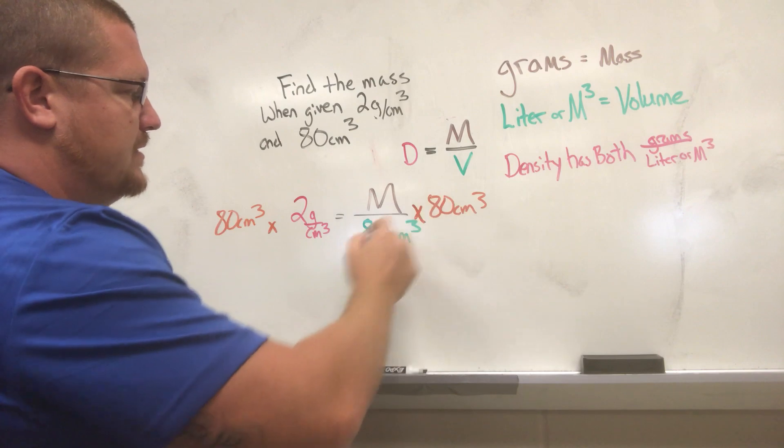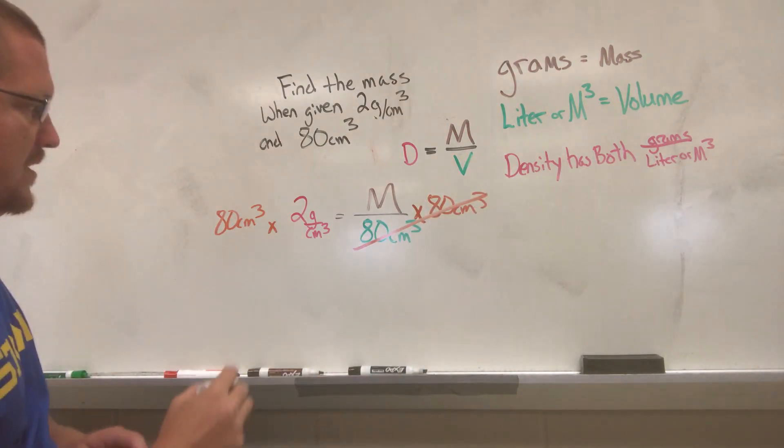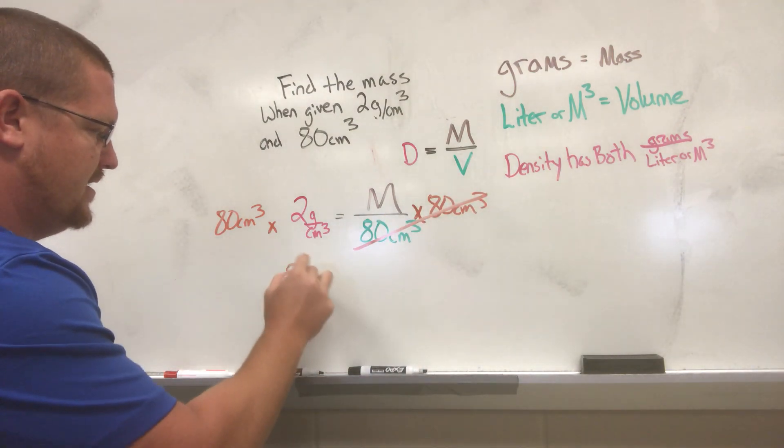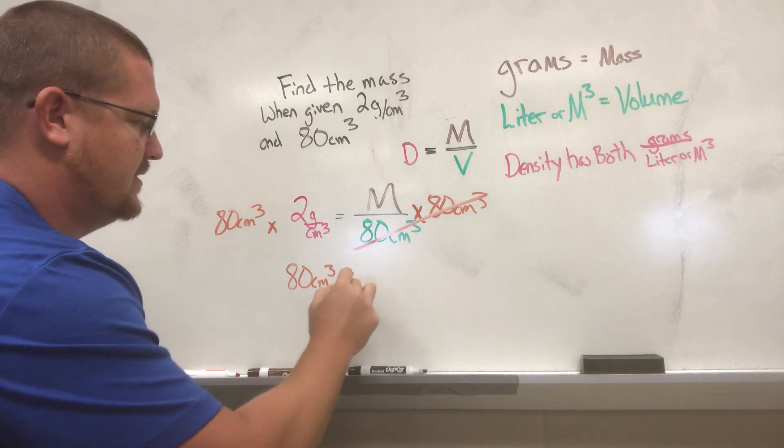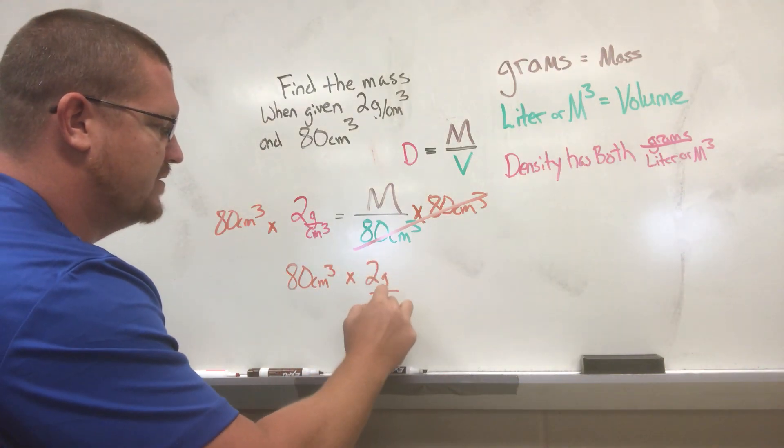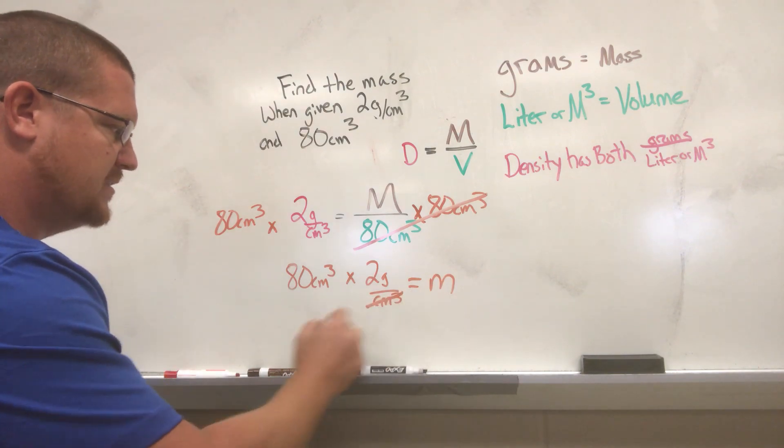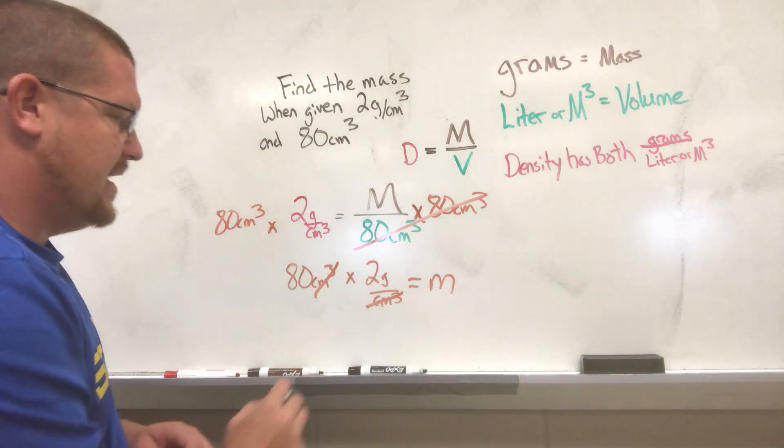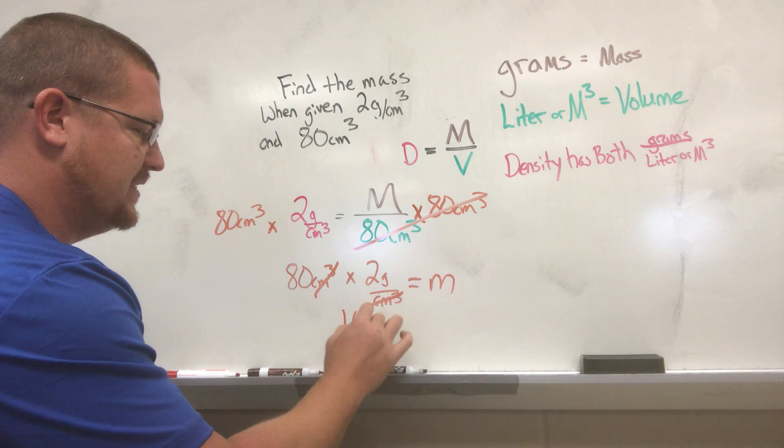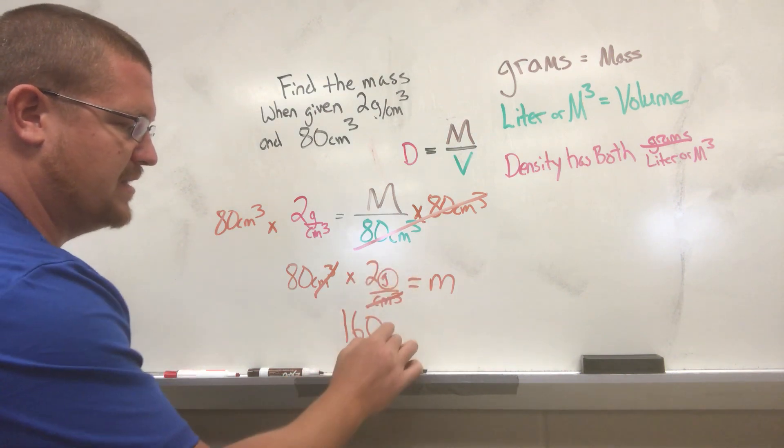When we do that, these cancel. All right, now we have 80 centimeters cubed times 2 grams over centimeters cubed equals M. Our centimeters cubed cancel. 80 times 2 is 160. We keep our grams for our unit.